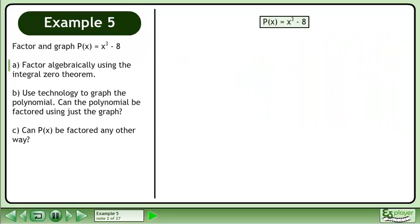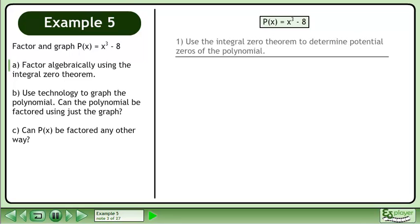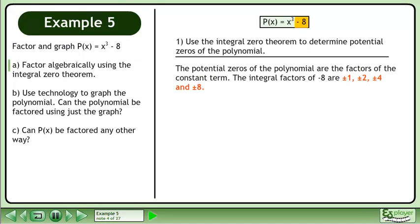Write the polynomial. Use the integral zero theorem to determine potential zeros of the polynomial. The potential zeros of the polynomial are the factors of the constant term. The integral factors of -8 are ±1, ±2, ±4, and ±8.